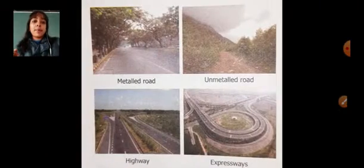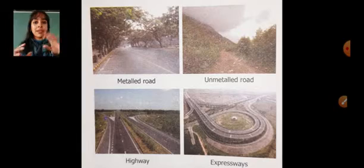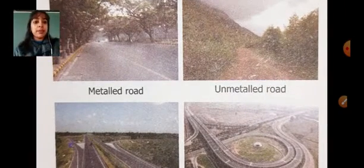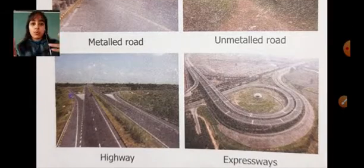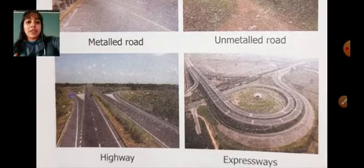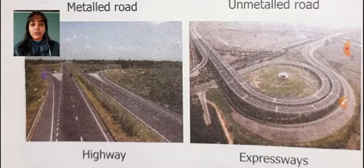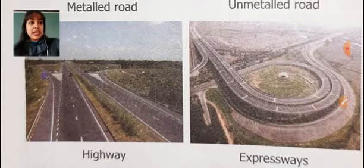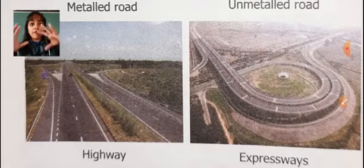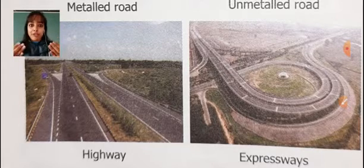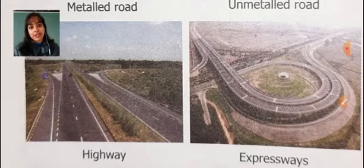Roadways may have a metalled or unmetalled road. In the picture, you can see the metalled road and the unmetalled road. Two more types are the highway and the expressway. A highway is a long road which connects distant places. An expressway is a four-lane road which makes traffic easier and faster.